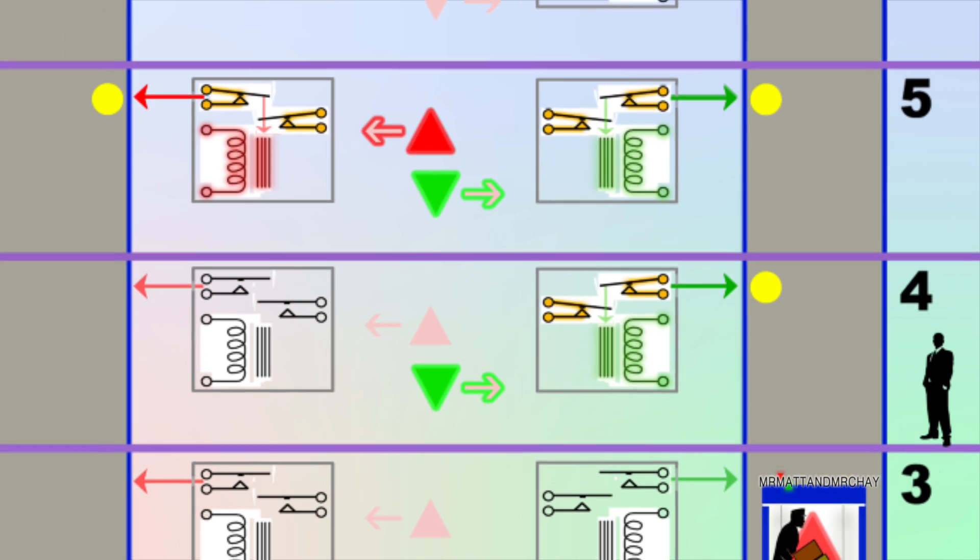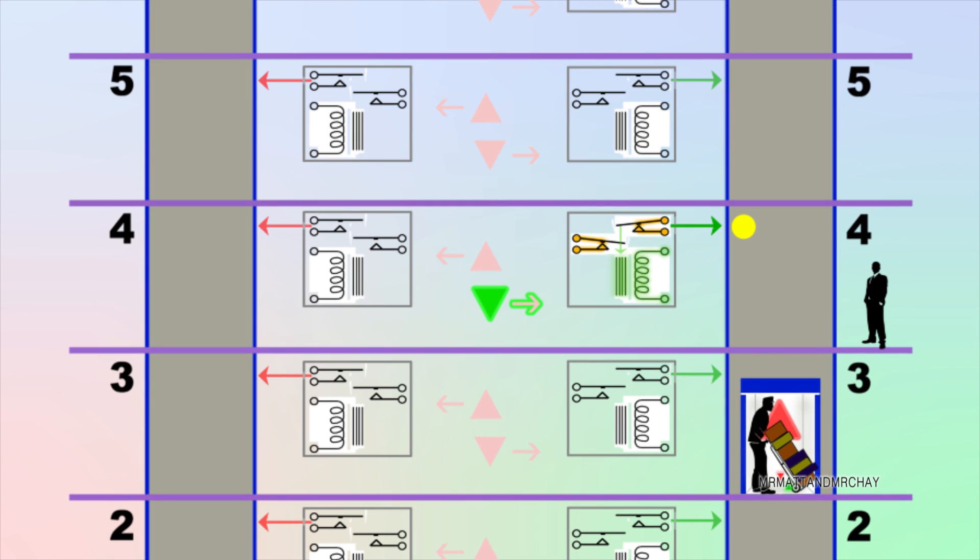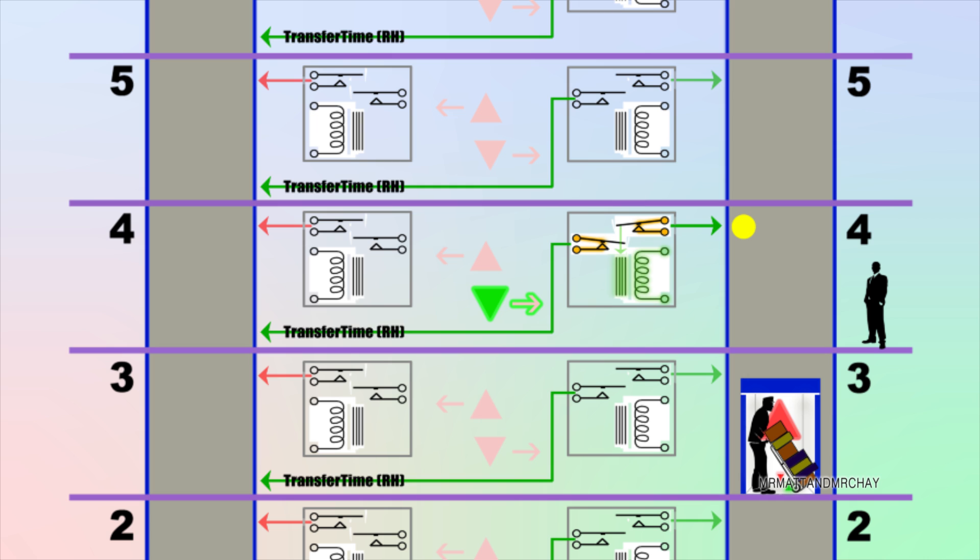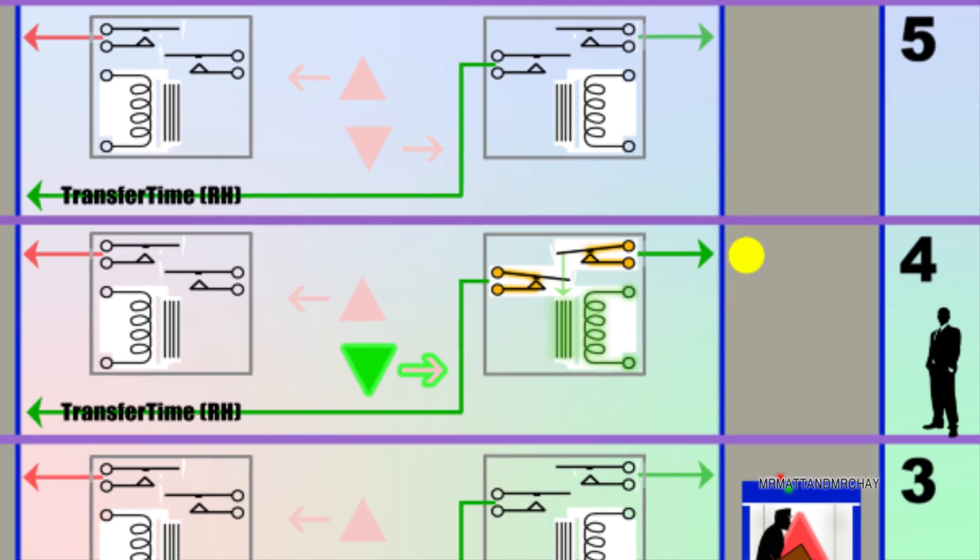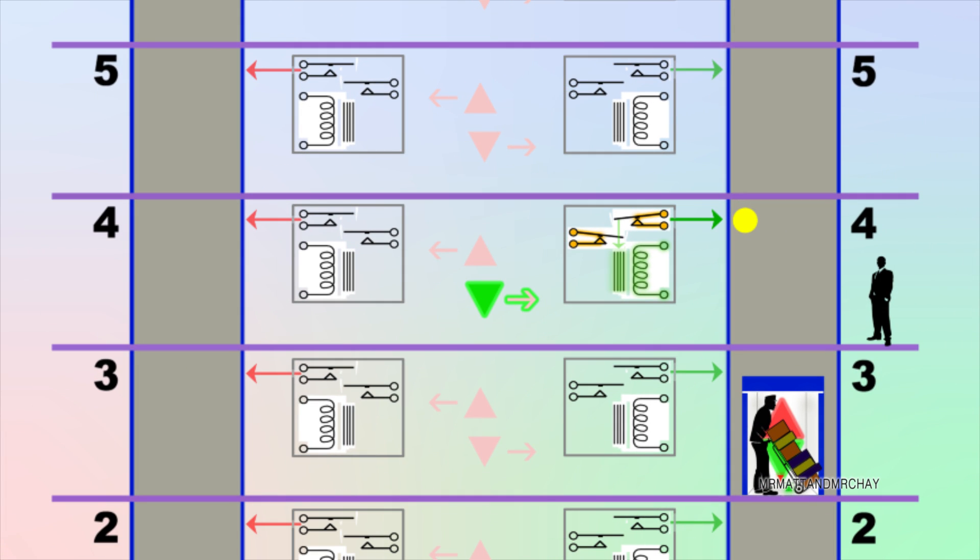When lift B is blocked open, or switched to inspection mode, or simply switched off, the down calls must be redirected to the other lift. This is the job of TT relay, transfer time. Now, the second set of contacts is connected to the other lift. This also works the other way around. If the left lift is not available, then the up calls are connected to the right lift.